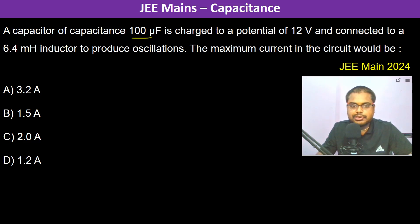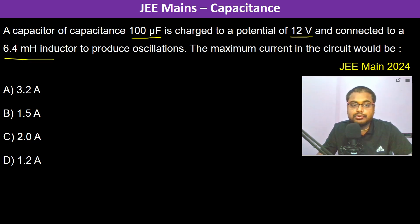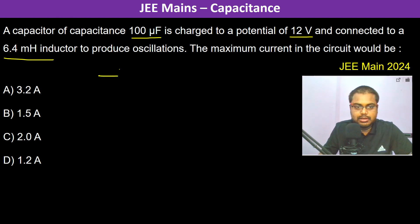A capacitor of 100 microfarads is charged to a potential difference of 12 volts and connected to an inductor to produce oscillations. This is the capacitor and this is the inductor.